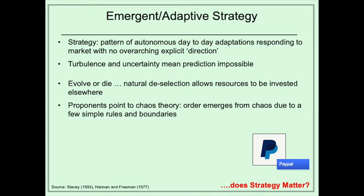The very turbulence and uncertainty mean that predictions are impossible, and therefore rationally deciding the future of the organisation is folly. At the extreme ends of this literature, there is a Darwinian view that you either evolve or die — natural selection in the marketplace will mean that firms will die and their resources will be released and invested elsewhere in firms that better fit the environment that has emerged. A less extreme view points to chaos theory and the idea that order emerges if you put in place just a few simple rules and boundaries within which the firm operates. We can see this playing out in famous decisions — Pfizer launching Viagra, and what about PayPal's origins?